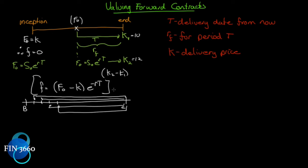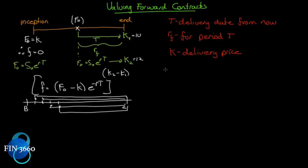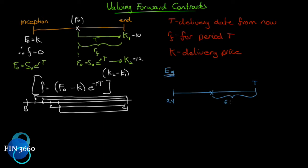Examples always help clarify, so let's do one. We'll put up a timeline to visualize what we're doing. Say that at some point in the past we entered into a forward or futures contract with a delivery price of $24, calculated at time T. Now, with six months left in the original contract, we want to figure out what it's worth. To do that, we need the risk-free rate — which we observe to be 10% per annum.